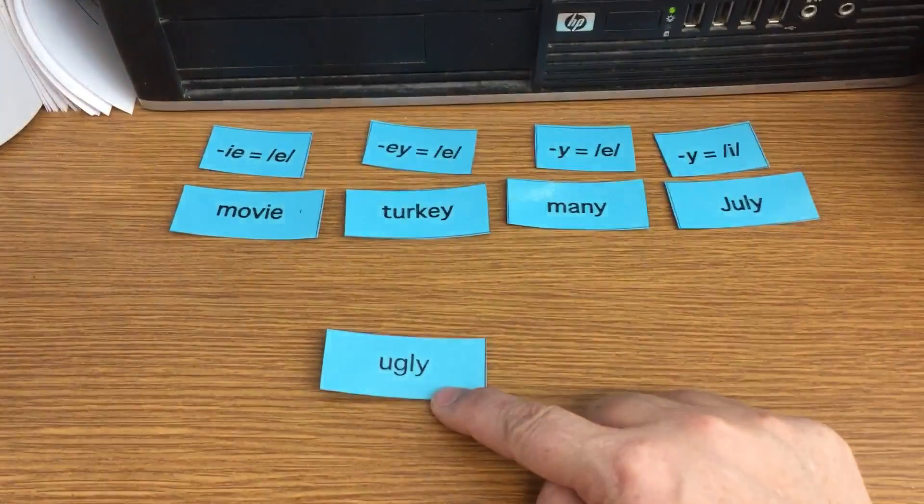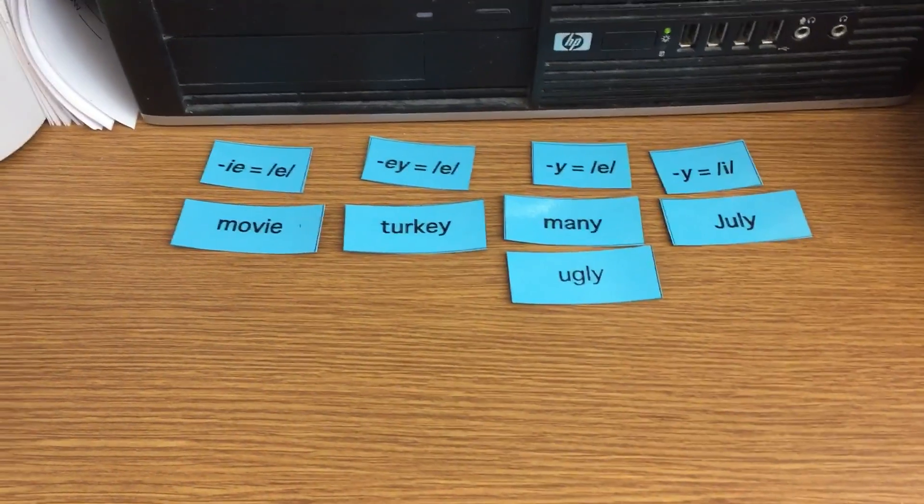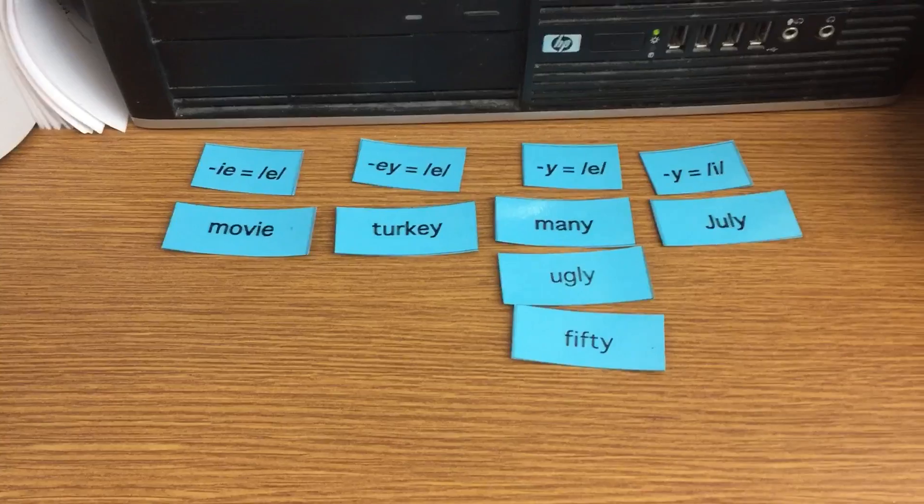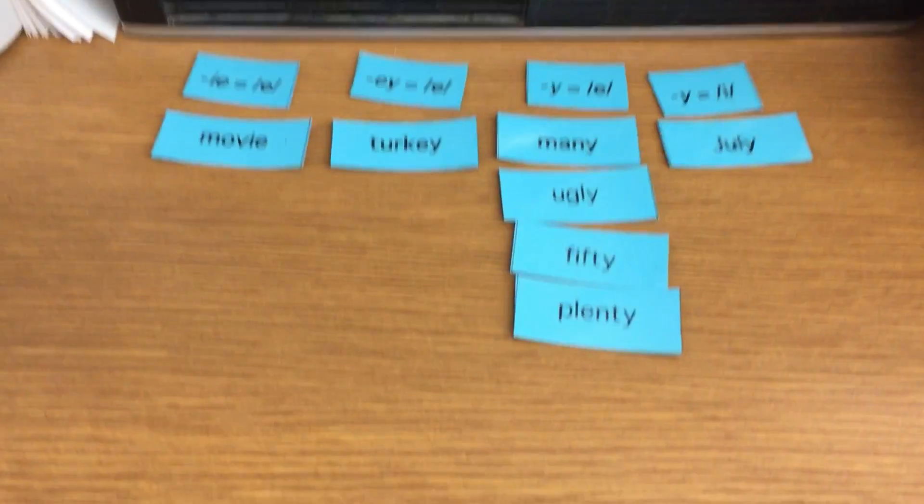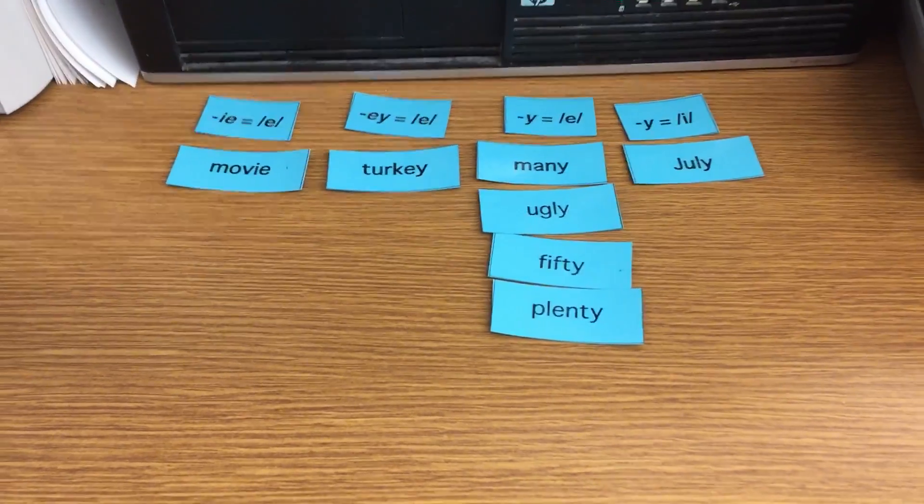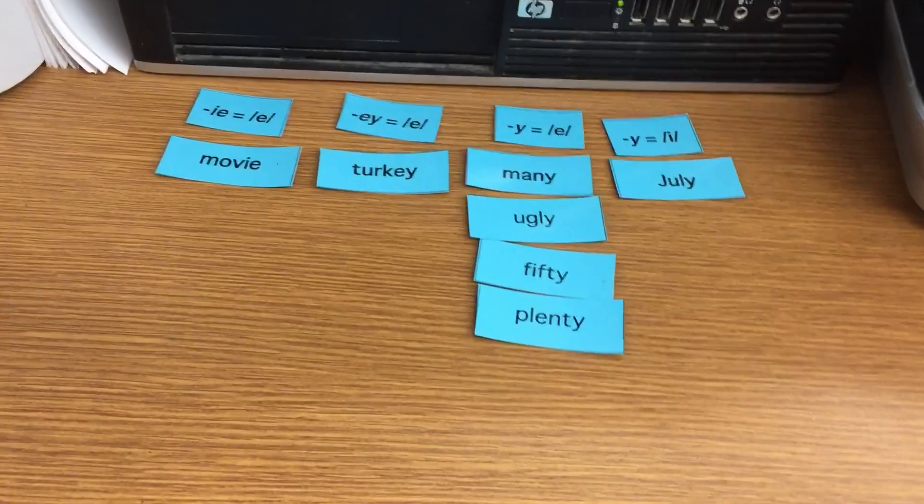Okay, so the first word we have is ugly. So it goes under many. Fifty goes under many. Plenty goes under many. Oh, I should let you sort it first. Go ahead and sort the rest of them. Hit pause, and then we'll check the rest together.